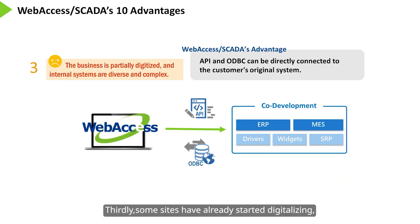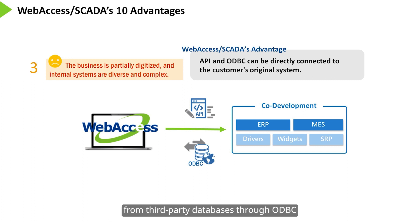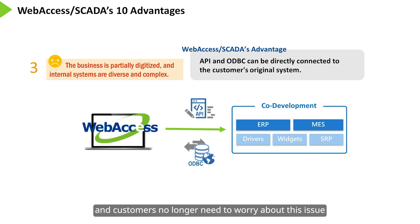Thirdly, some sites have already started digitalizing and there are often many internal systems that are diverse and complex. Web Access SCADA provides APIs to connect or save data from third-party databases through ODBC for seamless synchronization, and customers no longer need to worry about this issue.